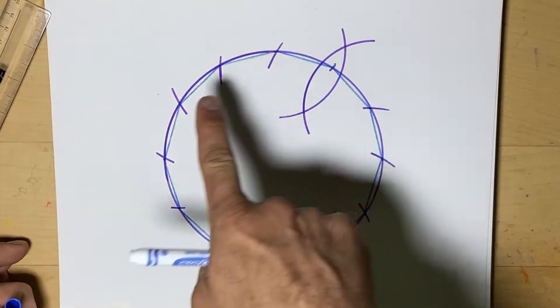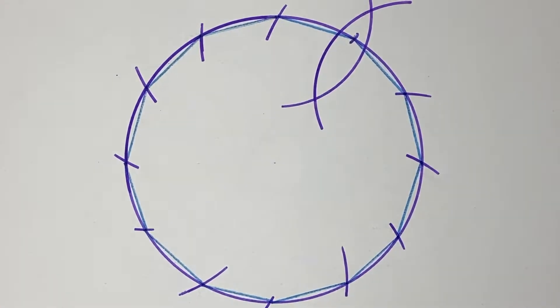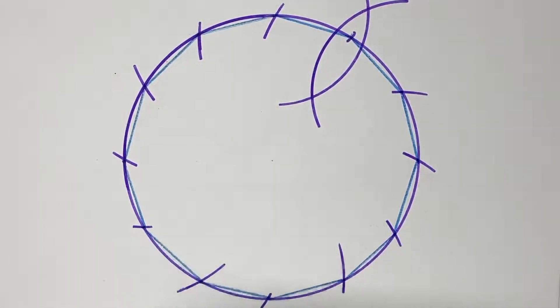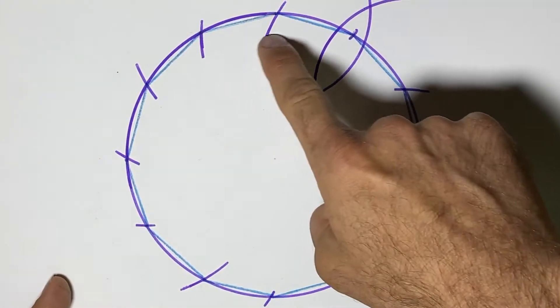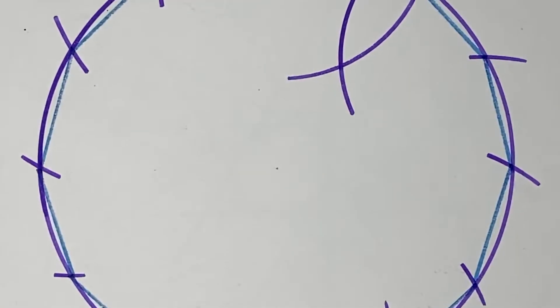And that is my 12-sided shape. You can see, after you get to 12, it starts to conform and look pretty accurately close to the circle.